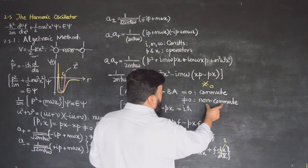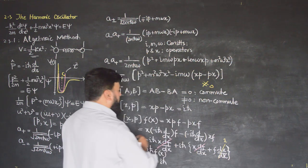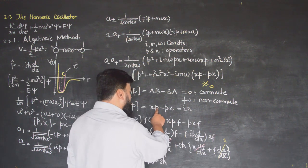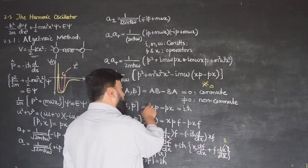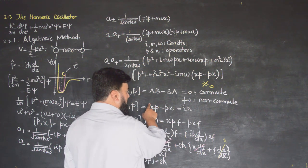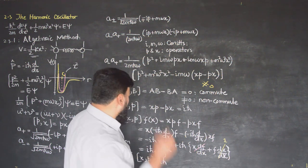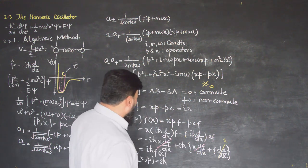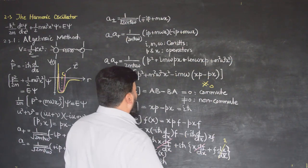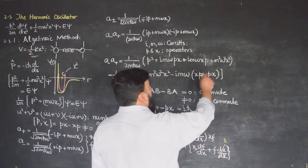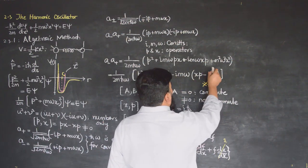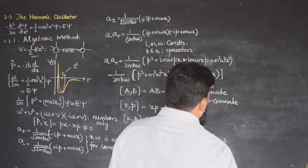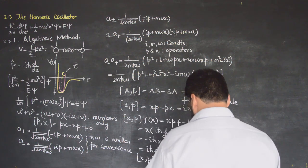The non-zero result [x, p] = iℏ means that x and p are non-commuting operators. The measurement of one disturbs the system for the measurement of the other, which is why the commutator is non-zero and equals iℏ.